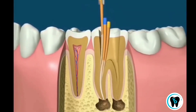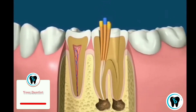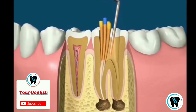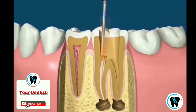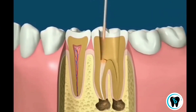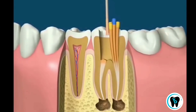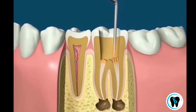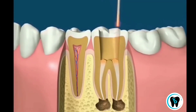After the canal is tightly sealed, the excess rubber cones can be removed with a heated instrument. The heated instrument can also be used to heat and compact the cones to better fill the canal space. For optimum treatment, one or more posts may be placed.